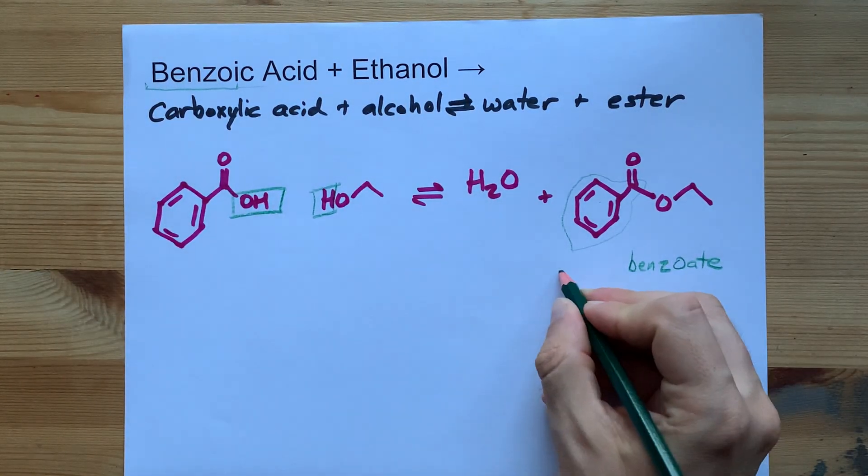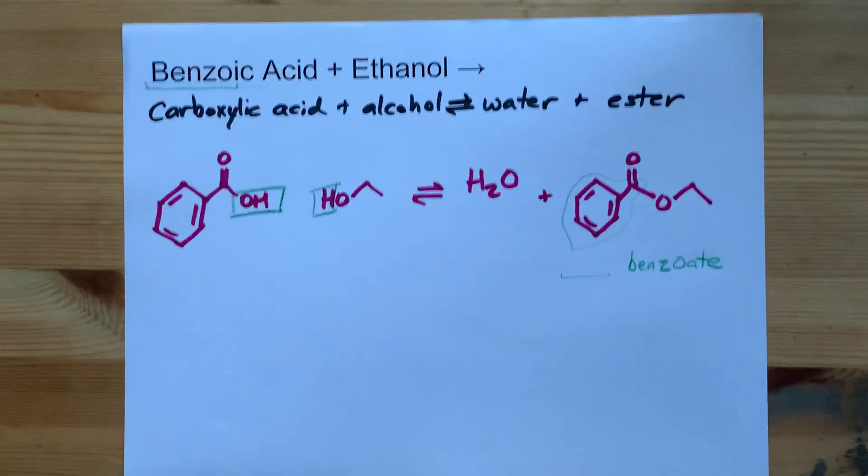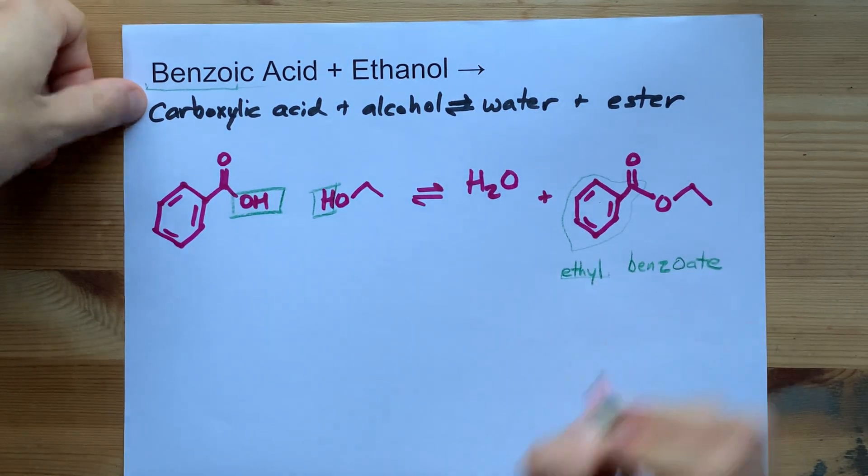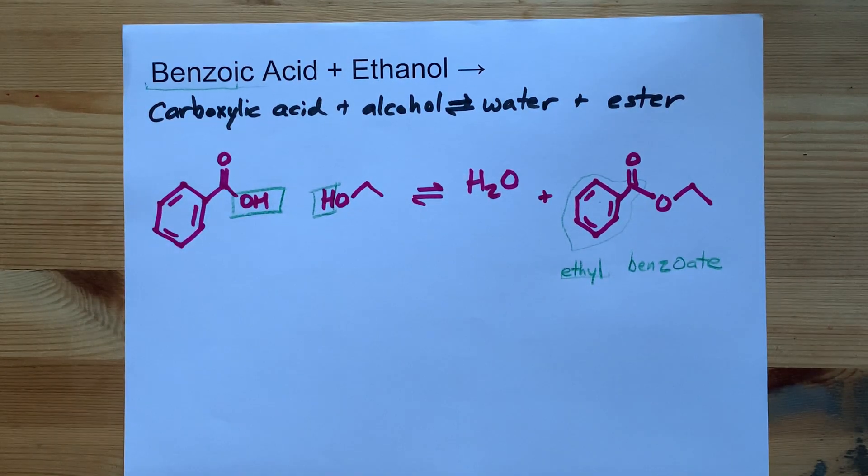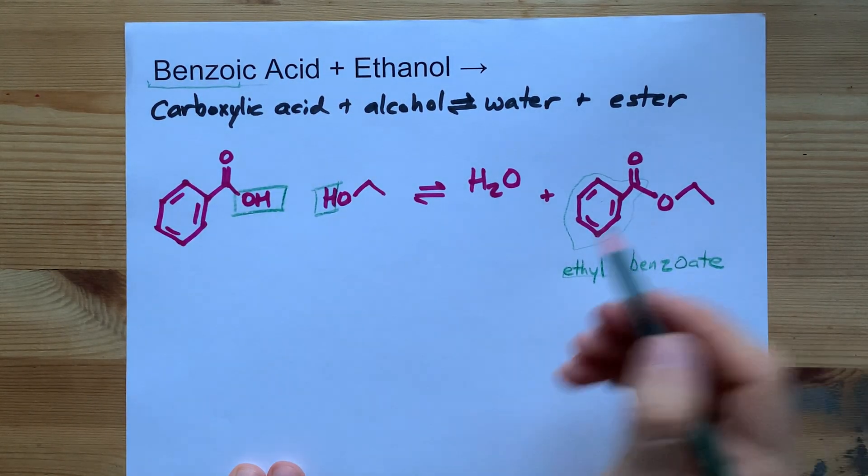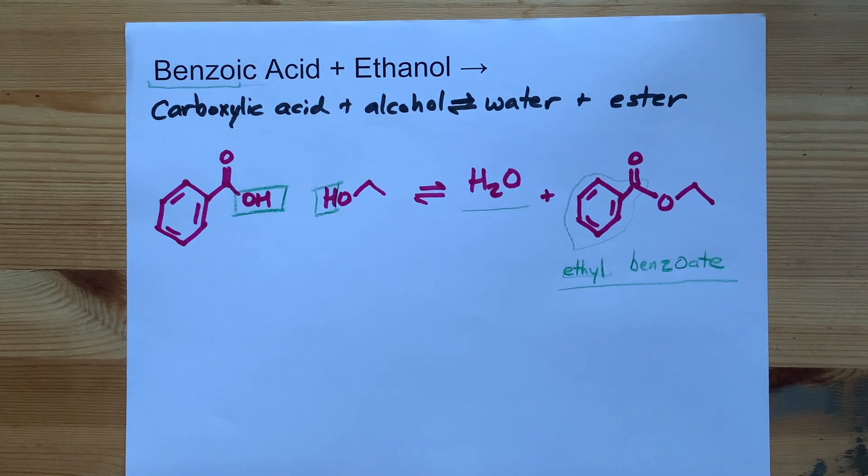And then the portion that goes out front with a space in between comes from the alcohol. Ethanol will give you an ethyl group hanging off of that O. So the answer to benzoic acid plus ethanol, the answer is water plus ethyl benzoate as an ester.